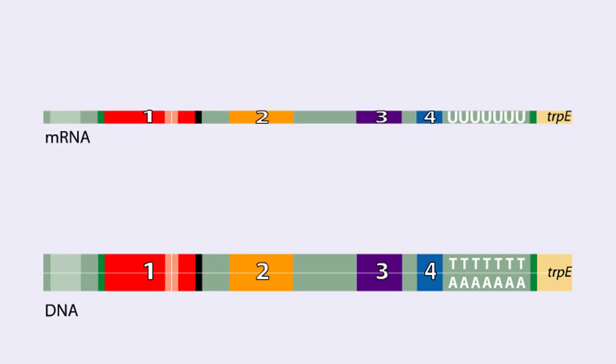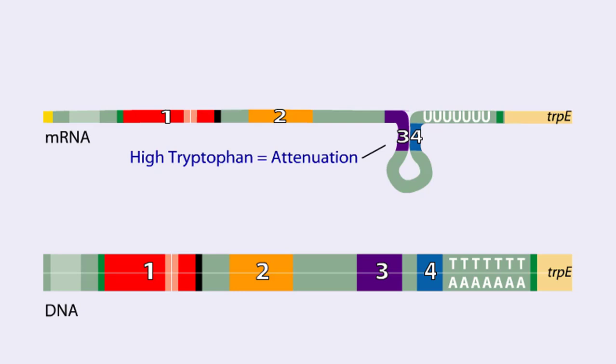When tryptophan levels are high, region 3 pairs with region 4. This structure terminates or attenuates transcription.